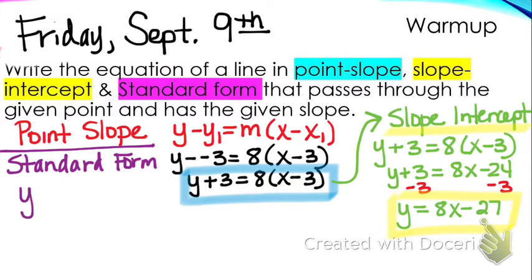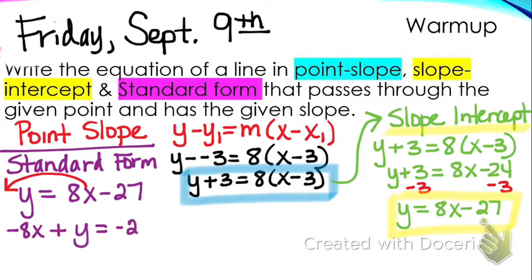So what we're going to do is take the equation y equals 8x minus 27. For standard form, x and y have to be together. So I'm going to subtract this 8x, which is going to become negative 8x plus y equals negative 27. But remember, A — the number in front of x — that's the only number that has to be positive. So if this was positive, I would be finished. But you cannot leave this first number negative.